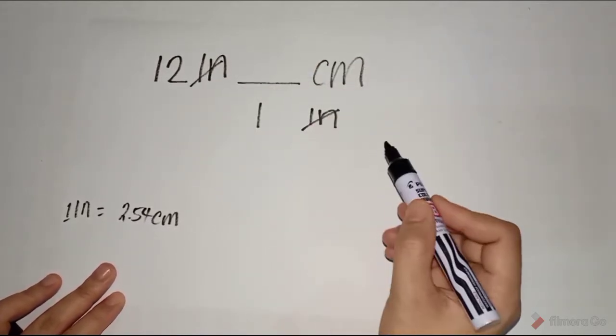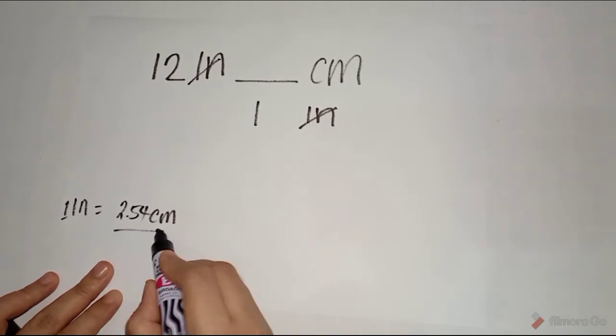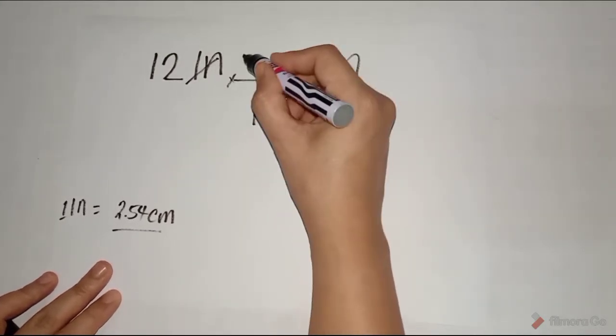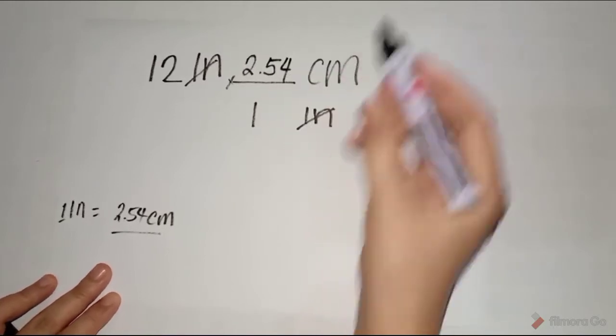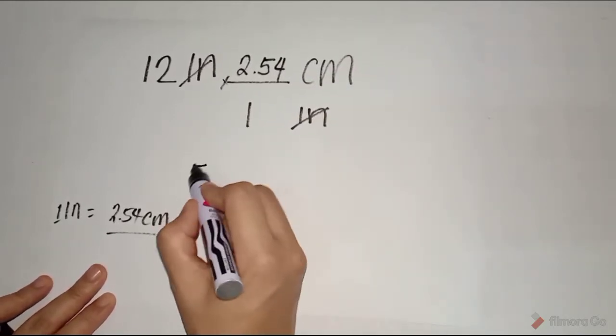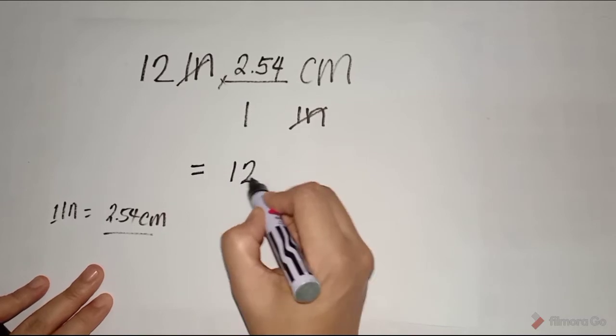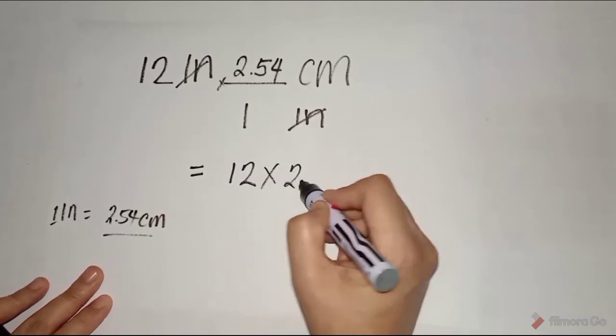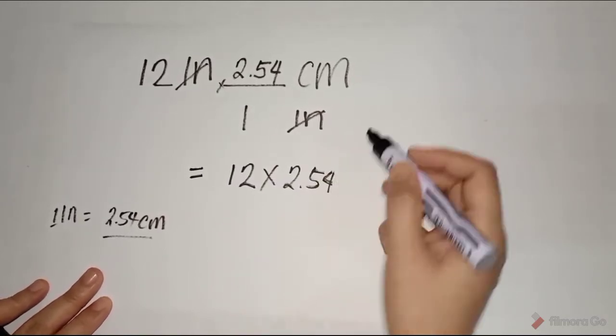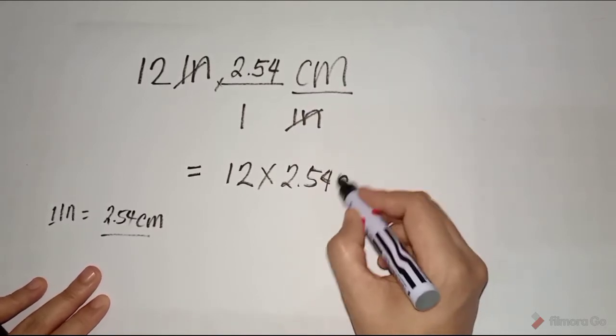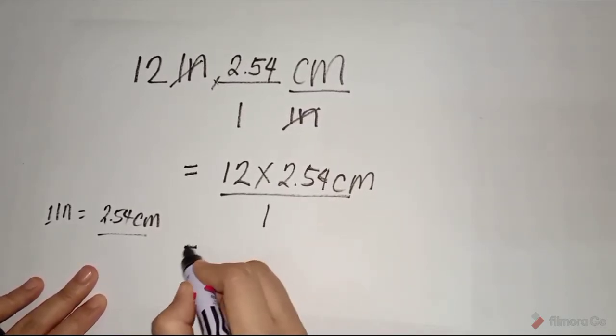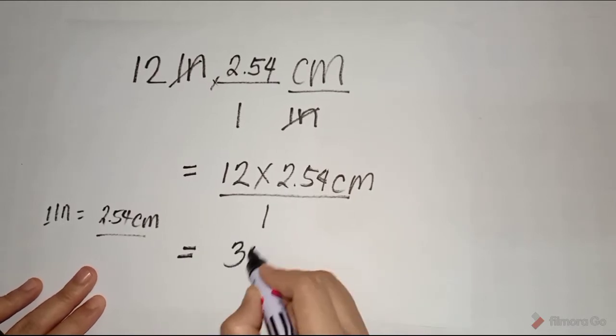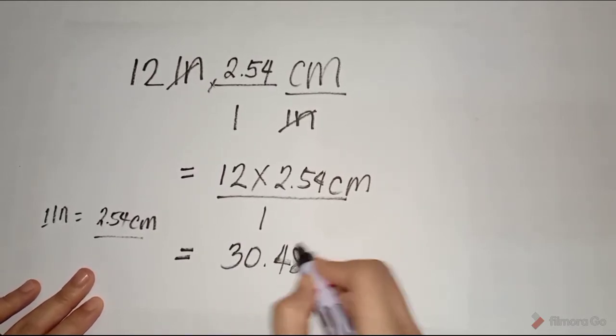Cancel and the conversion factor is 2.54. Therefore, we will multiply this by 2.54, and this is also equivalent to 12 multiplied by 2.54. The remaining unit is centimeter over 1. So, this is equivalent to 30.48 centimeters.